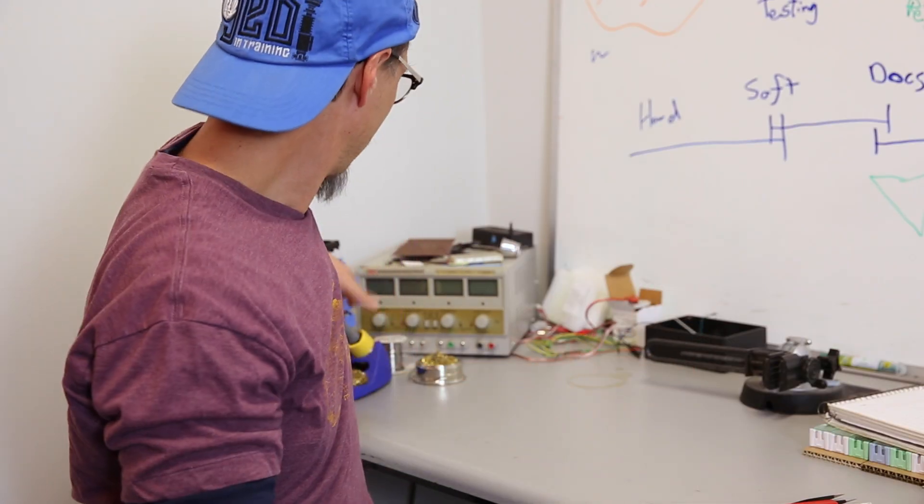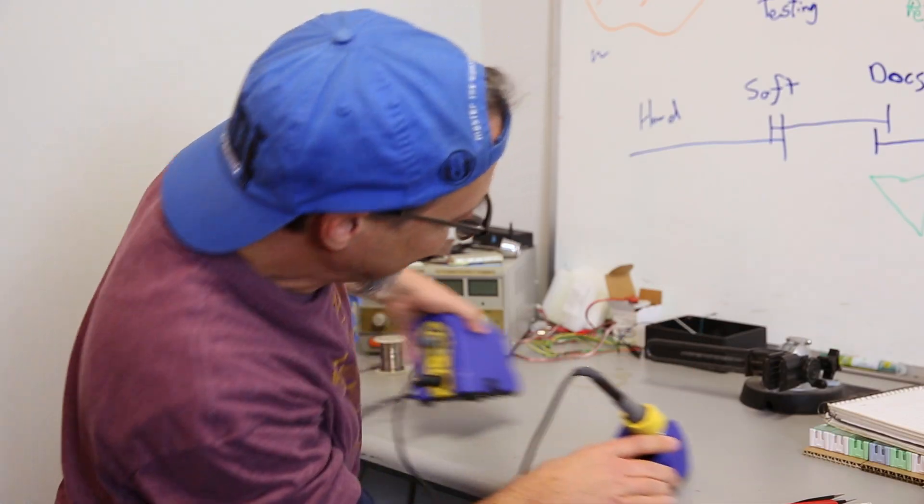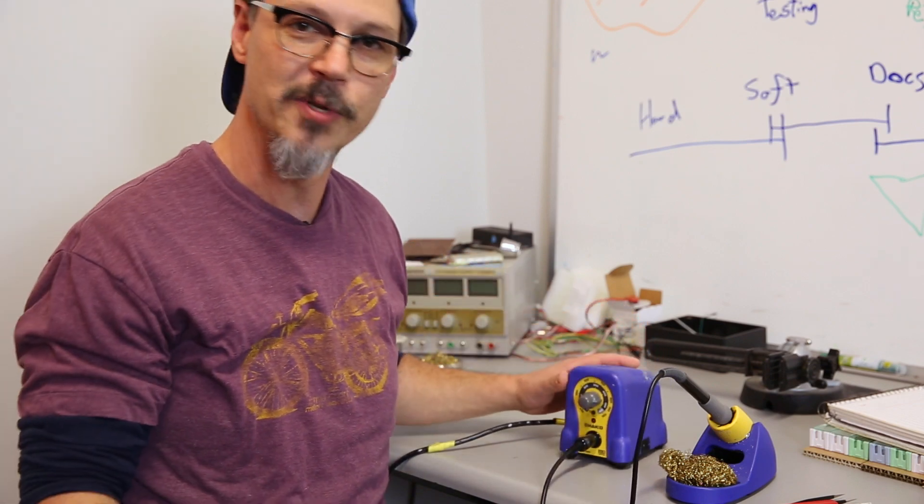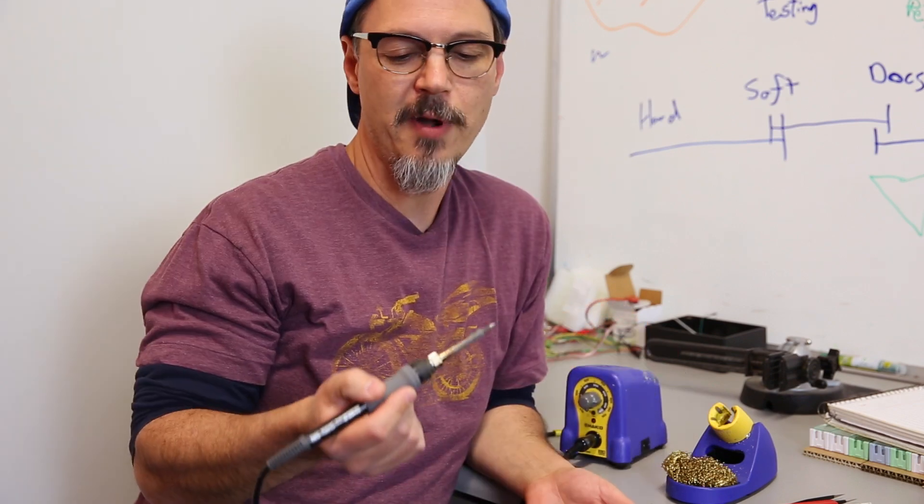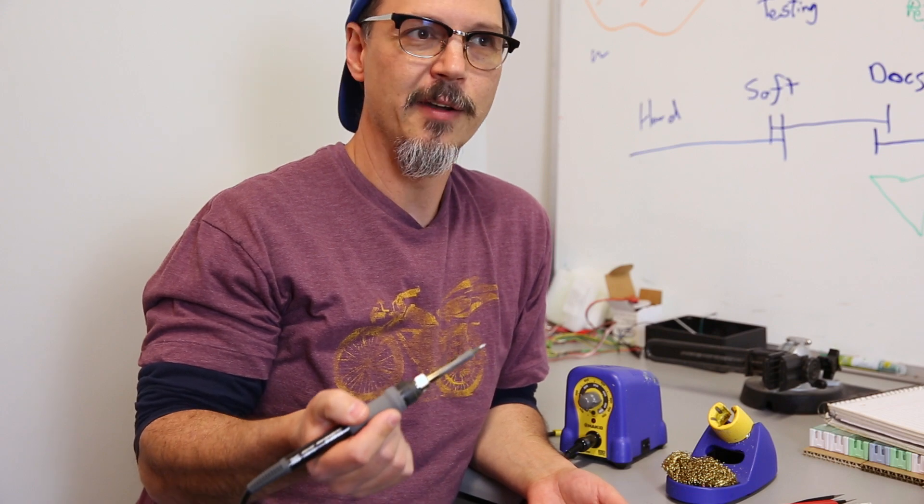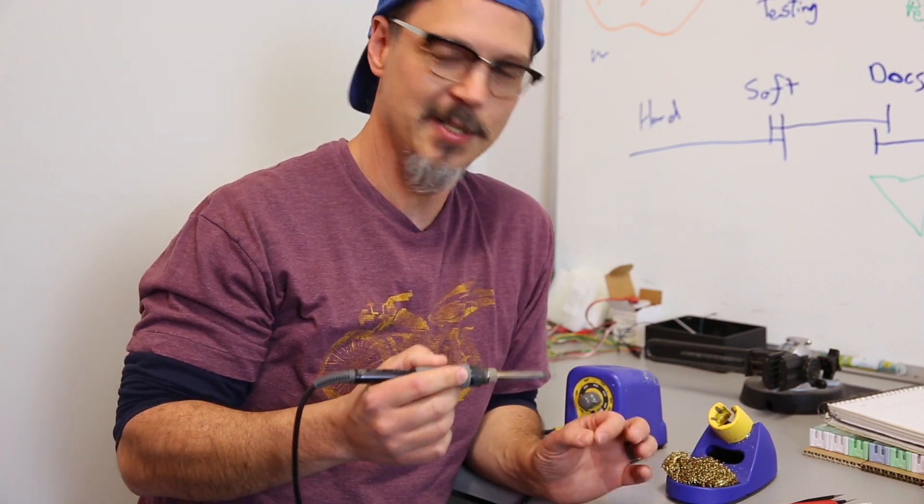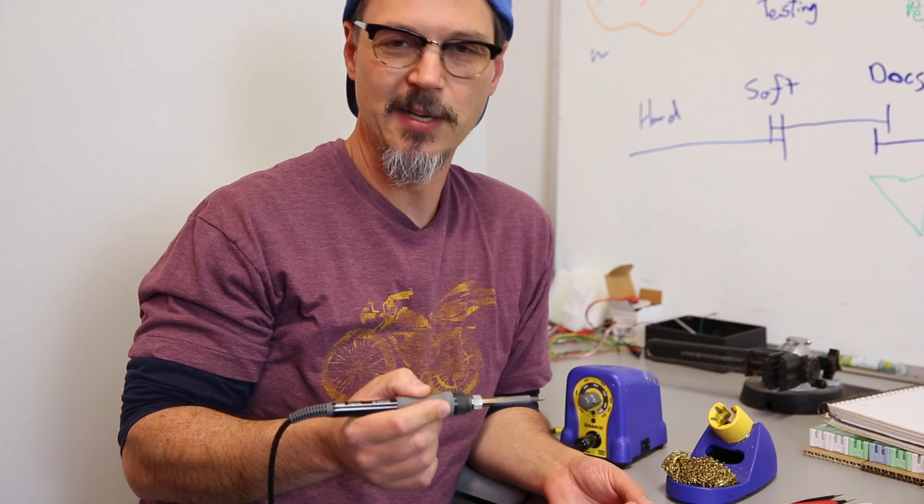My main iron, I use this guy, which is the Hakko FX-888 that we sell on our storefront. I would rather have a bigger tip and wick off the excess solder because it transfers a lot of heat and it ensures a better connection. Every time I use a tiny tip, they tend to get bent, they tend to get eaten, they don't transfer much heat and all of my solder joints look like words I can't say on this video.